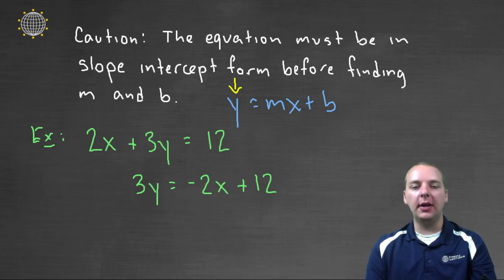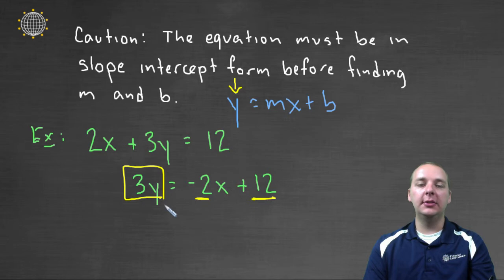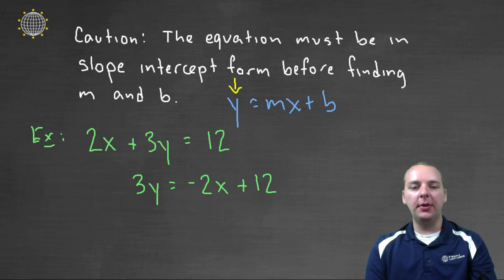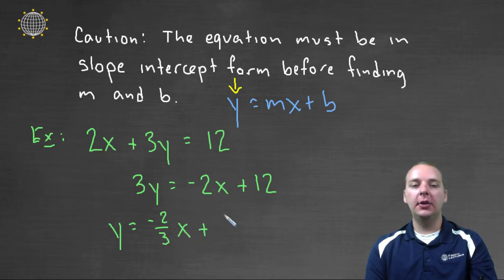And let's divide both sides by 3. Because even right here, negative 2 is not the slope and 12 is not the y-intercept. Because it's not y equals, it's 3y equals. So we have to be careful about that. So let's divide both sides by 3. Y equals negative 2/3 x plus 12 divided by 3, which is 4.